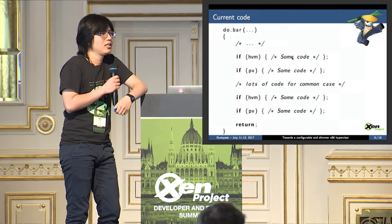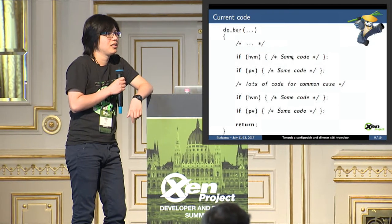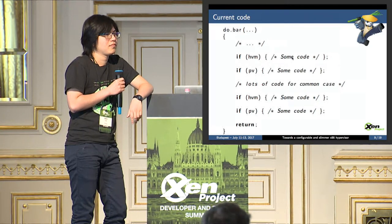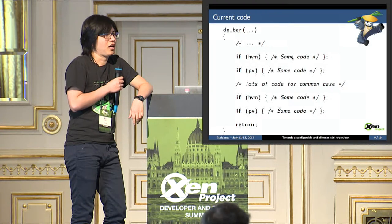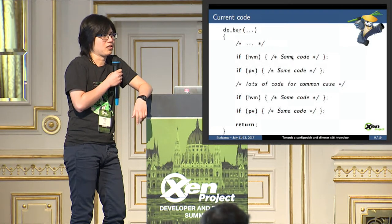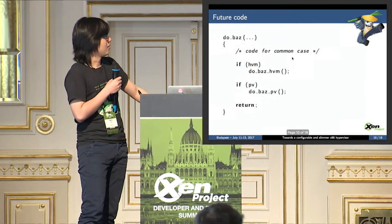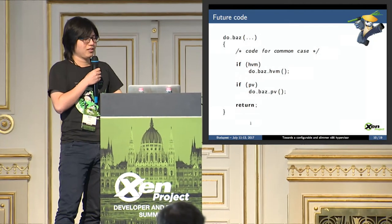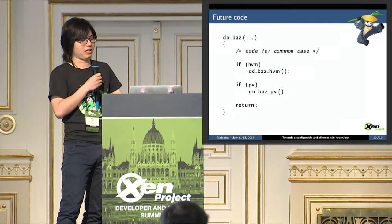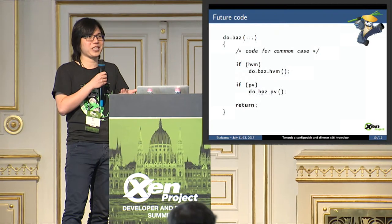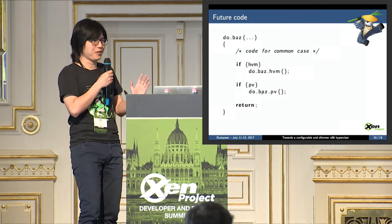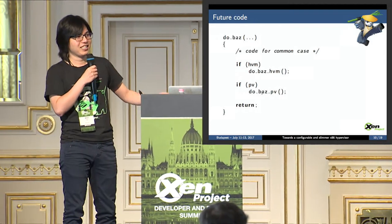Question: Some of the code does one thing that has little bits specific to PV or HVM. If you put them in two completely separate functions you're going to have a lot of duplication — is that part of the plan? Response: There won't be duplication, because HVM-specific code moves into one function and PV code into another. If there is shared code, it becomes common code.